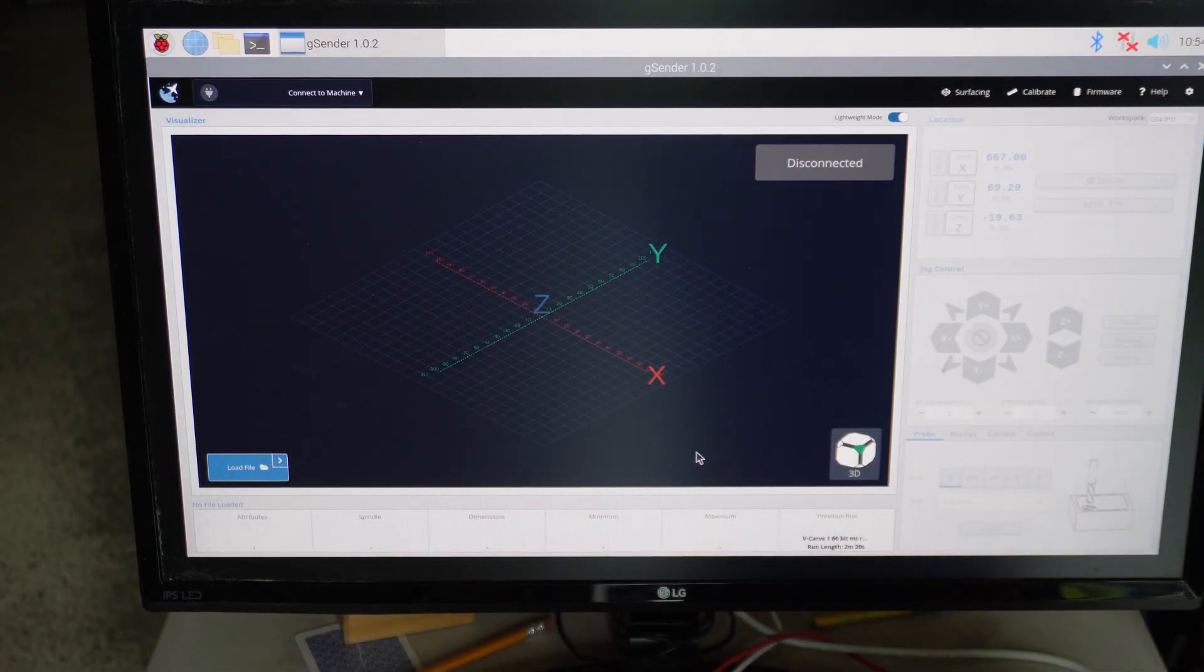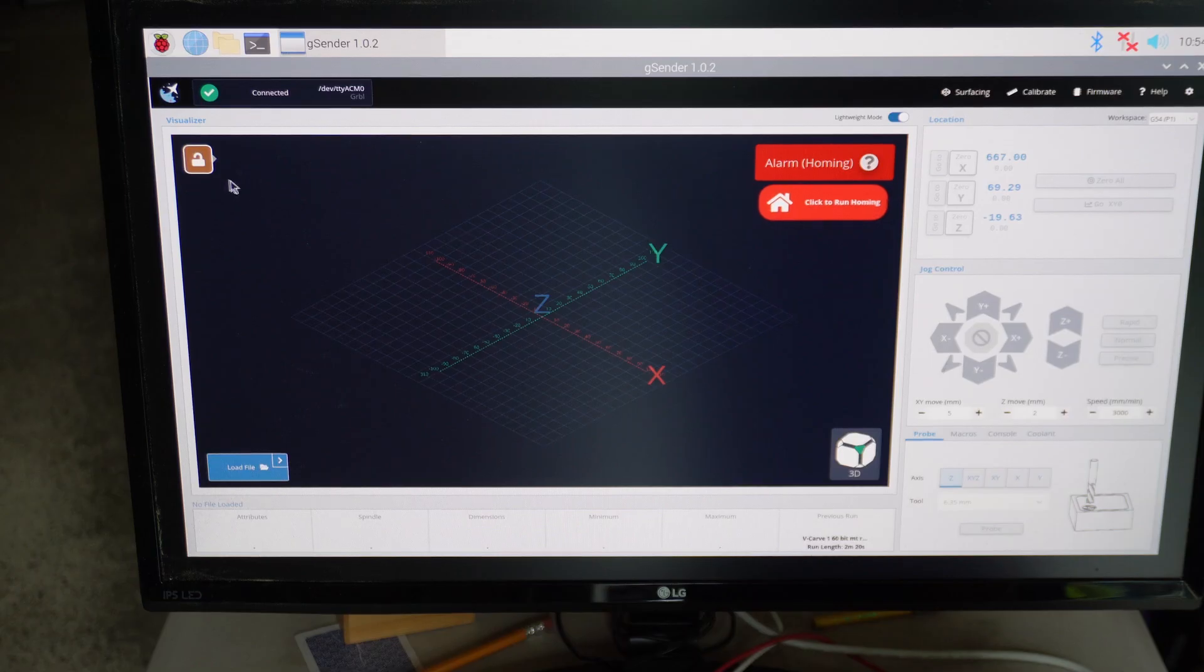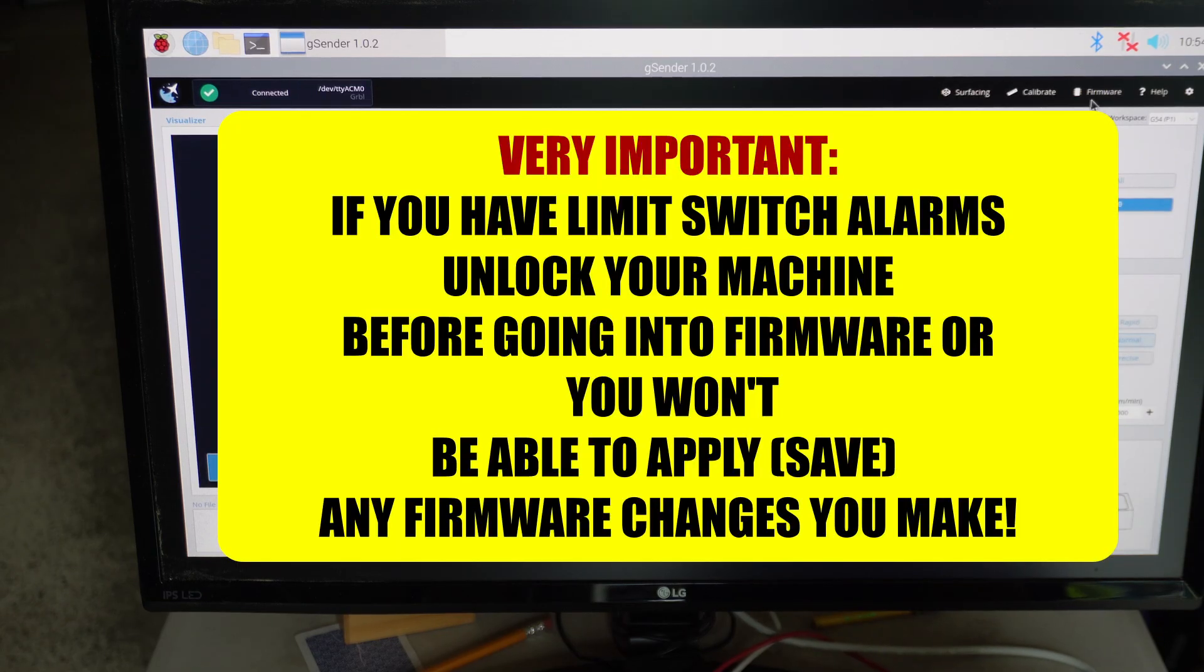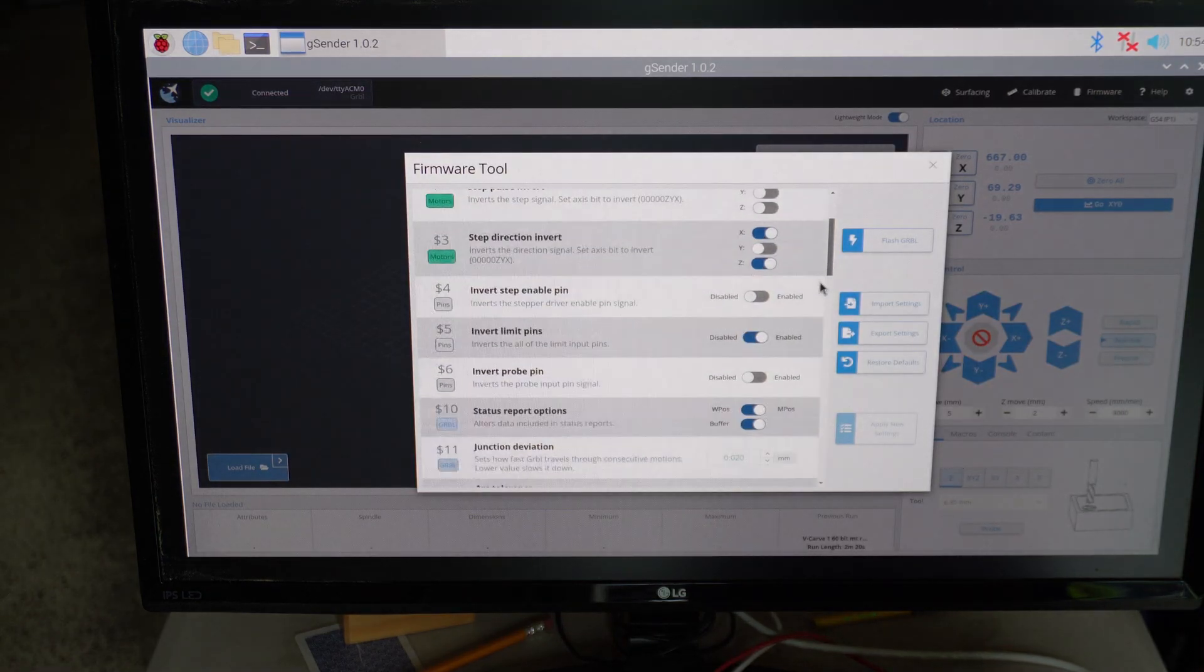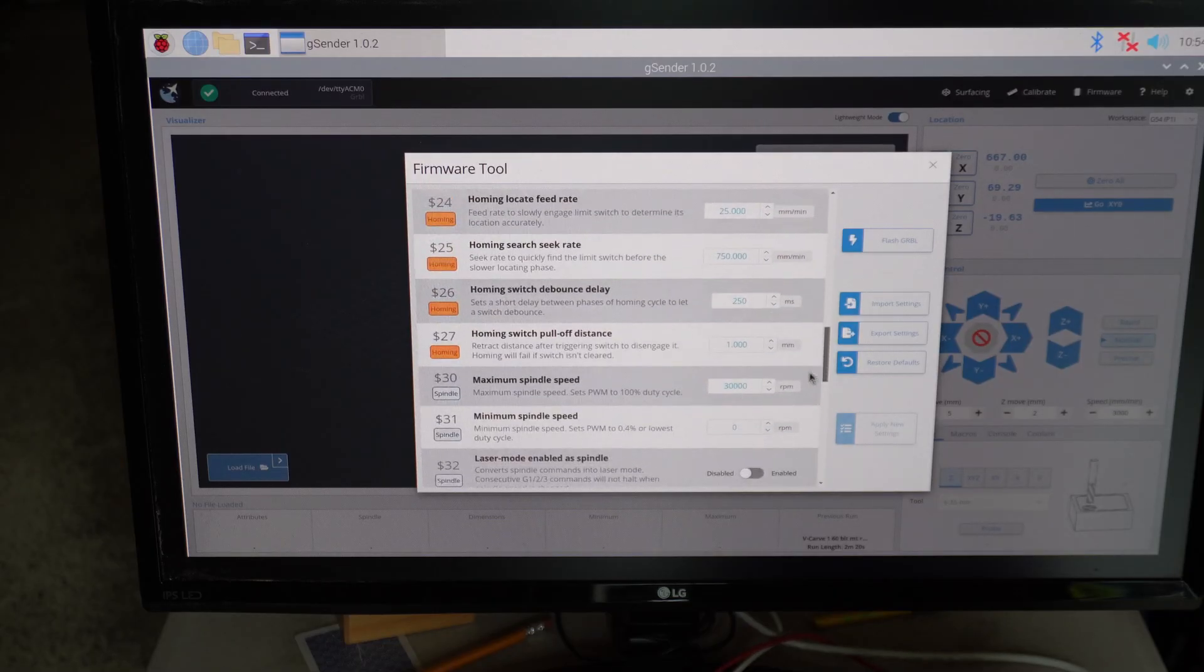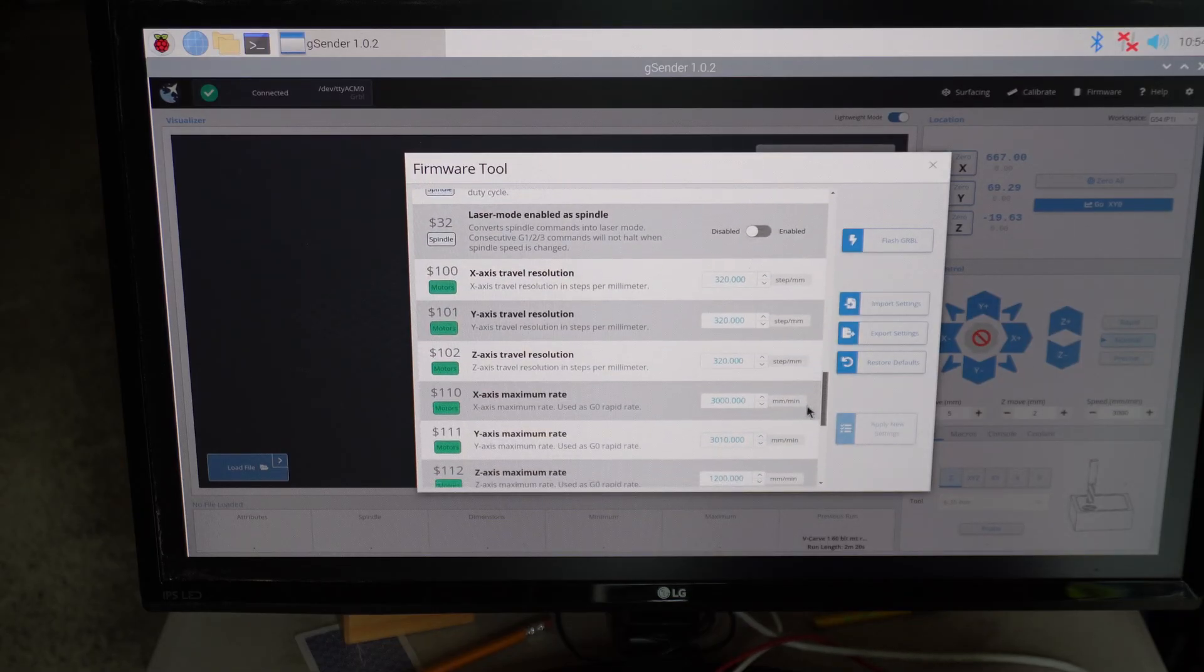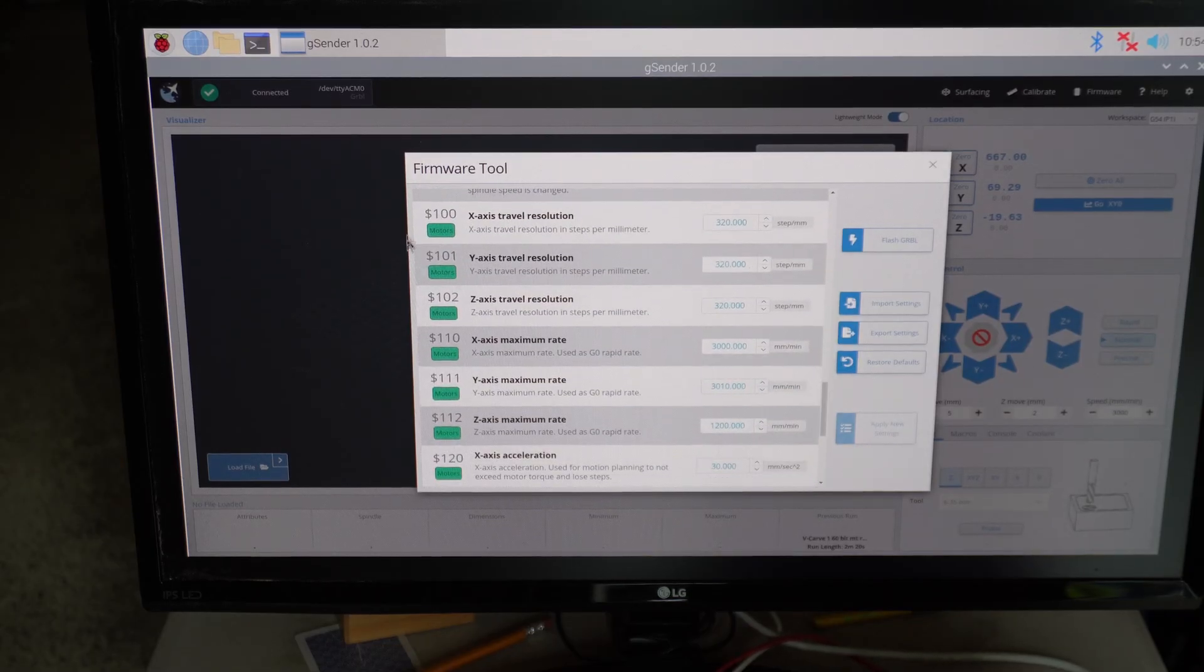Just so you can see the process of getting to those firmware settings, I plugged in my Arduino, I've hooked it into my Raspberry Pi, I'm going to connect to my machine. Because I have limit switches, it will have an alarm code that comes up. I have to unlock my machine. I'm going to go over here to the far right hand side, I'm going to click on firmware, then we simply drag down to get to the settings that we are concerned with. In this case, we are looking at the X, Y, and Z travel resolution.